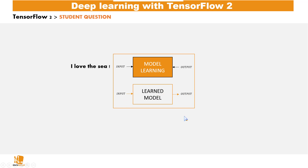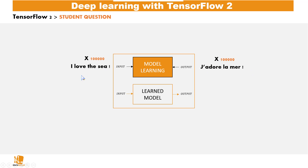Let's take the example of machine translation. Suppose we have this input: 'I love the sea,' and its translated output in French, which is 'je dors la mer.' What we'll do here is take in, say, a hundred thousand of such examples.